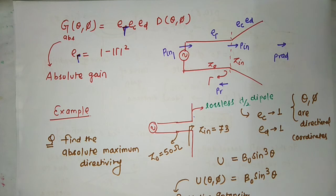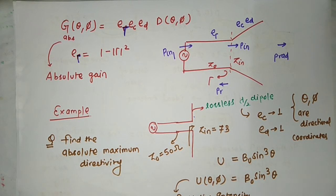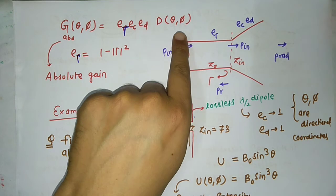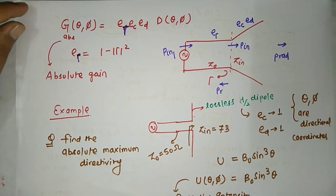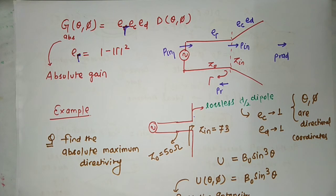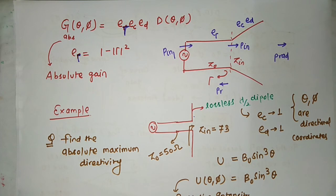Gain depends on two things: efficiency of the antenna and directivity. Directivity defines the directional nature of the antenna and depends on theta and phi, which are directional coordinates. Directivity is the ratio of radiation intensity of the test antenna to radiation intensity of the reference antenna. Gain accounts for efficiency and directivity. If you find this lecture useful, please like, subscribe, and share. Thank you.